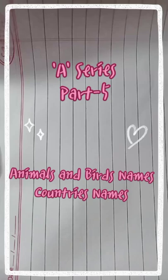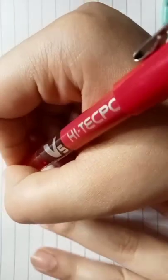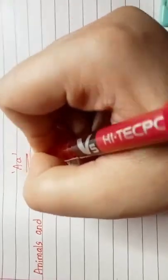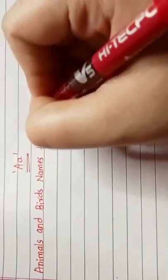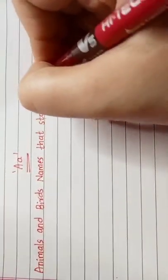A series part 5. In part 5 we are going to see animals and birds names that start with letter A, and also the country's names that start with letter A. Okay, so first of all we are going to see animals and birds names that start with letter A.